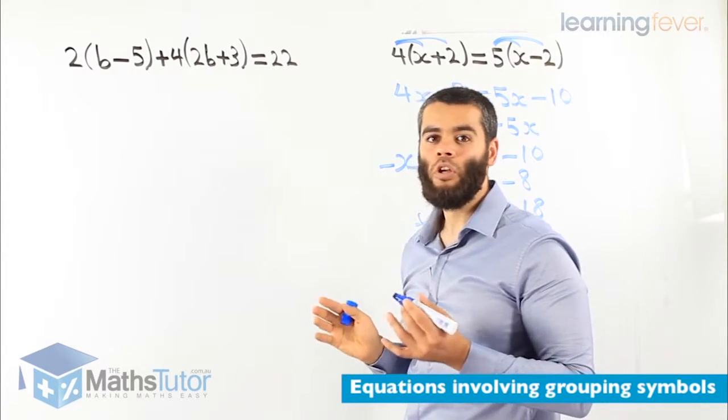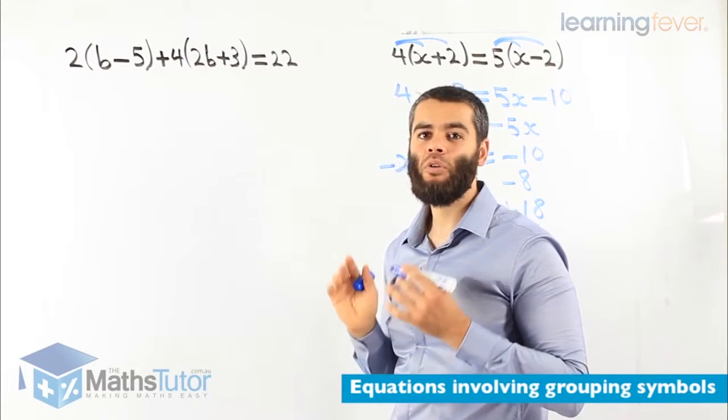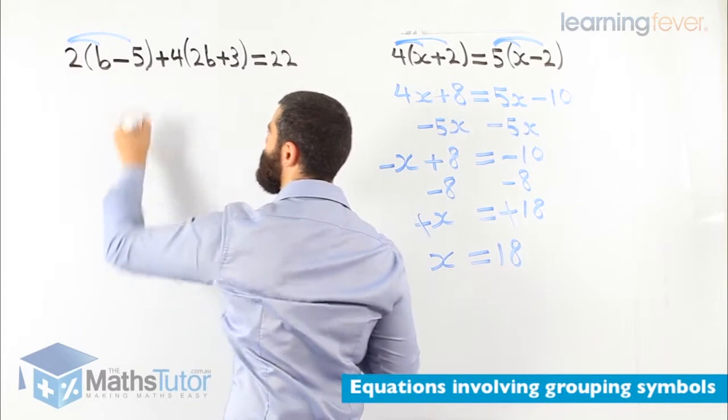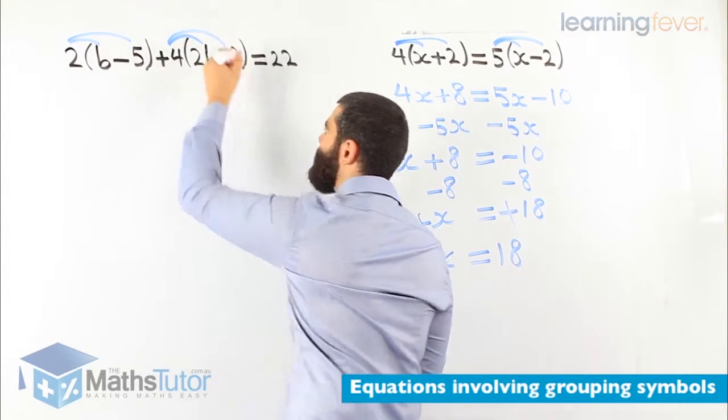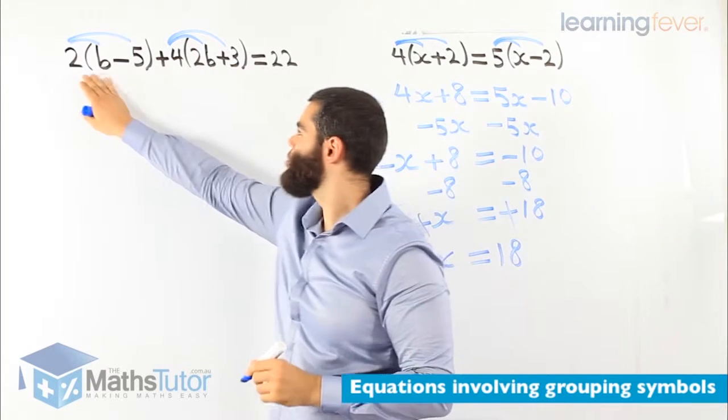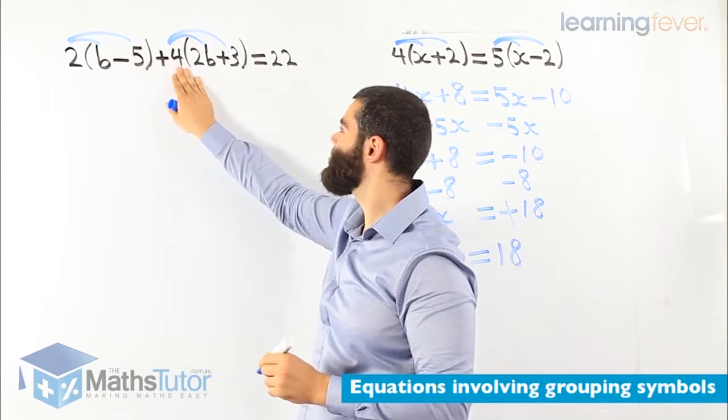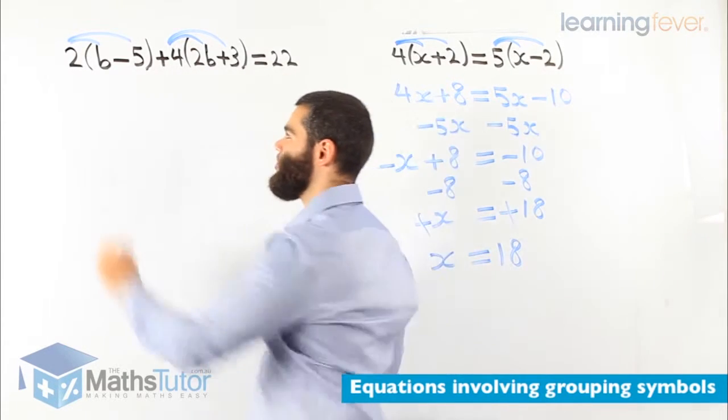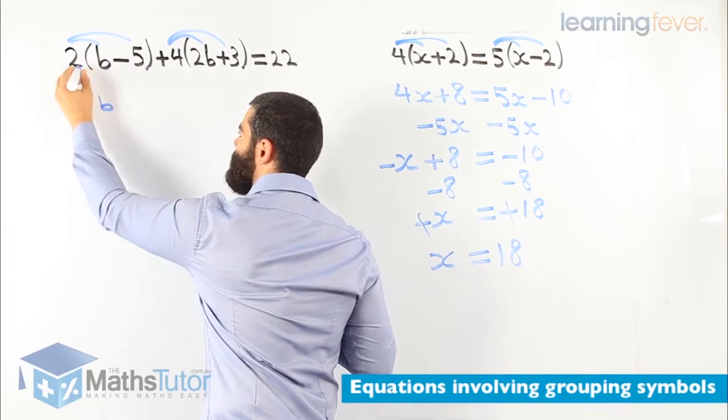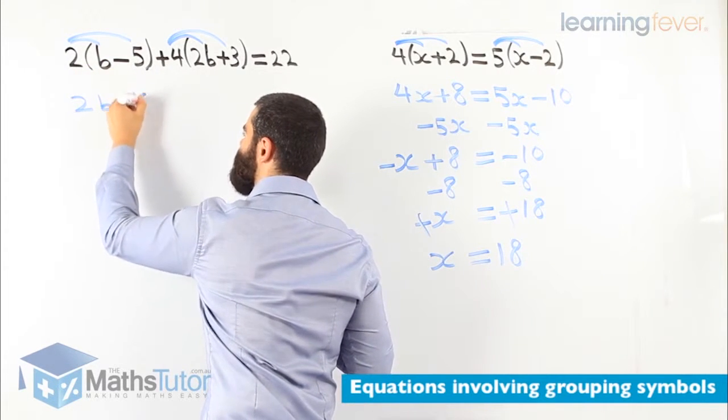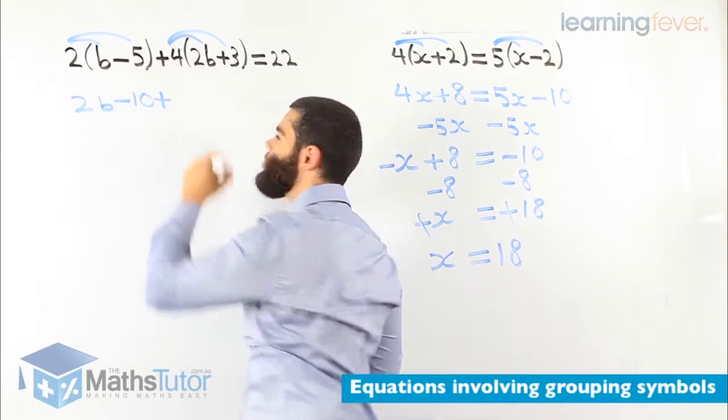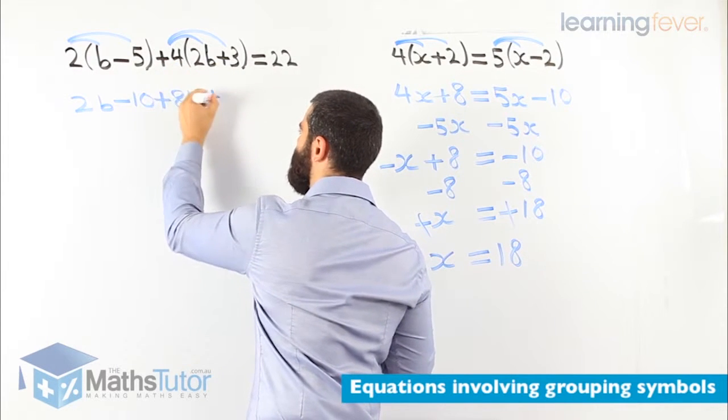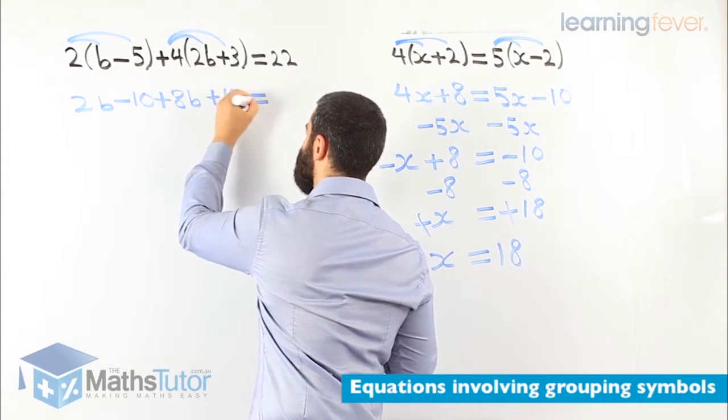2 open bracket b minus 5 close bracket plus 4 open bracket 2b plus 3 close bracket equals to 22. So now what do we do? When we see the brackets the grouping symbols we are going to expand first. 2 times b 2 times negative 5 and positive 4 times 2b positive 4 times 3. So the 2 times everything inside these brackets and the positive 4 times everything inside these brackets equals to 22. Let's expand. 2b 2 times negative 5 is negative 10 plus 4 times 2b is positive 8b and 4 times 3 is positive 12 equals to 22.